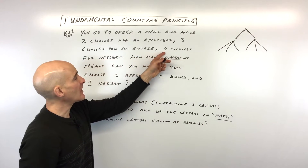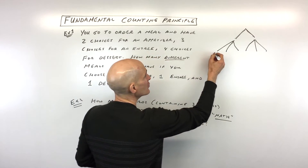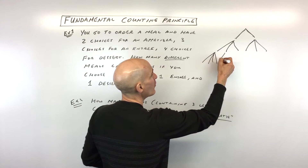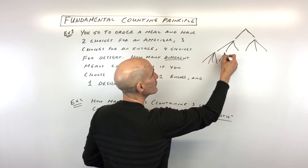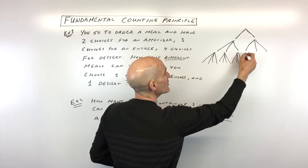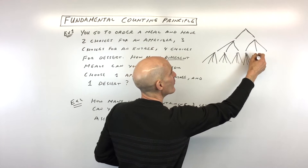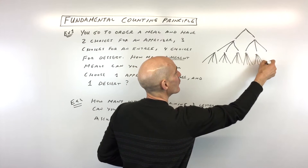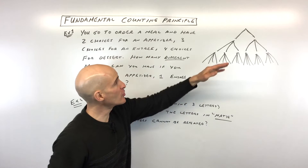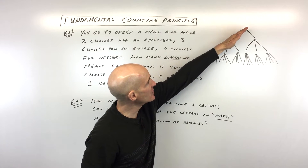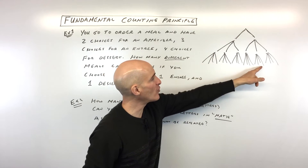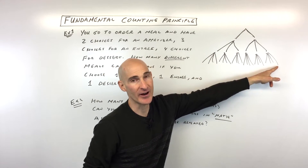Then you've got four choices for dessert. So from each entree branch you could go one, two, three, or four. It's kind of like a choose-your-own-adventure — you go down any of these branches and end up at one of these endpoints.